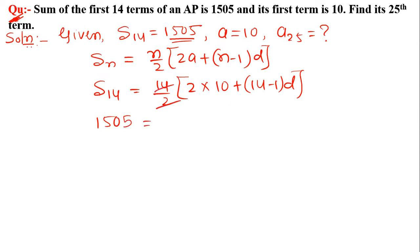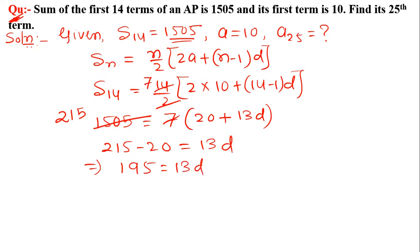1505 equals 7 times 20 plus 13d, and 1505 divided by 7 equals 215. So 215 minus 20 equals 13d, which implies 195 equals 13d. Therefore d equals 195 upon 13, which equals 15.